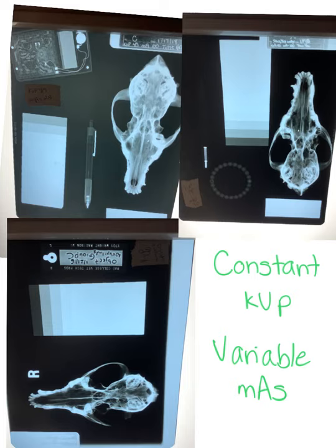In this set of x-rays we are going to be looking at variable MAS x-rays. On these three films, the KVP stayed the same — every one of these was shot with a KVP of 40. So the exact same force of x-rays hit each one of these three films. The only thing we changed was the MAS — how many x-rays are hitting the film. Constant KVP, variable MAS.